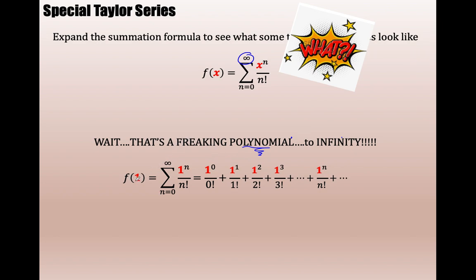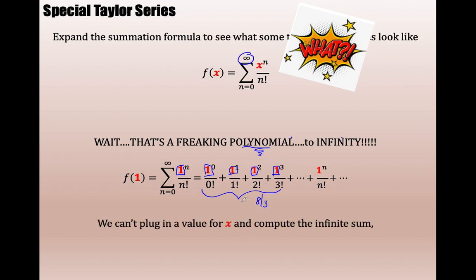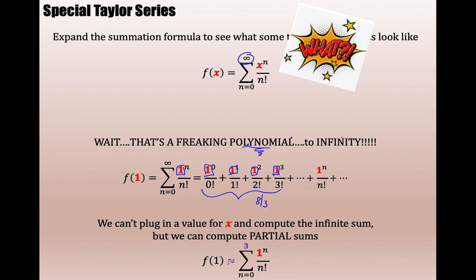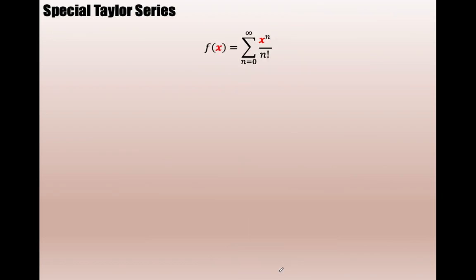That infinite sum is a polynomial — an infinite polynomial. I can cut off that polynomial, plug in a number, and get a partial sum. So f of 1 means putting 1 in for x. Expanding this: first term, second term, third term, fourth term — what is that infinite sum? I don't know, but I know that going to the 4th term, that sum is 8/3. f of 1 is approximately 8/3. What if I kept going? Instead of stopping after 3, what if I did to 5, or to 12?